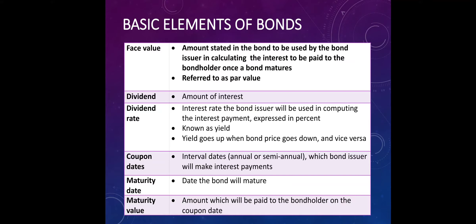Dividend refers to the amount of interest that will be given to the bondholder, while dividend rate is the interest rate — also known as yield. Coupon dates refer to interval dates; it could be either annual or semi-annual. Annual is once a year and semi-annual is twice a year, which the bond issuer will make interest payments. The coupon dates tell you when the bond issuer will be giving interest payments to the bondholder. The maturity date gives you the date the bond will mature or be fully paid by the bond issuer. The maturity value is the amount that will be paid to the bondholder on the coupon date.